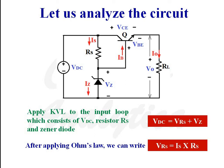Let us analyze the circuit of a series transistor voltage regulator. Applying KVL to the input loop, which consists of unregulated DC voltage VDC, series resistor RS, and zener diode with breakdown voltage VZ, we get: VDC = VRS + VZ. We can also write VRS = IS × RS.